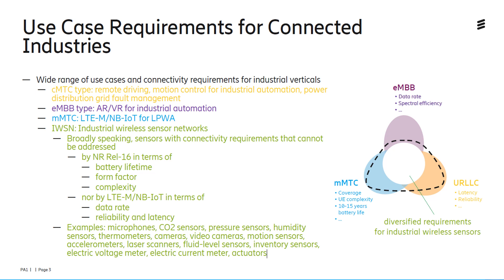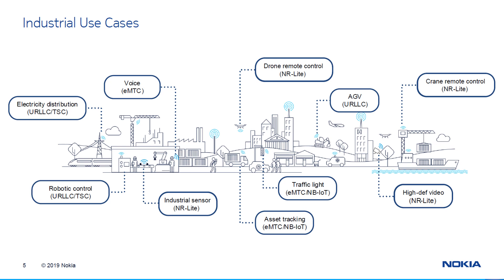This slide from Ericsson talks about the requirements for connected industries. Ericsson believes NR Light is very important to meet the Industrial IoT, or IIoT, requirements. Similarly, a slide from Nokia highlights industrial use cases and points out where URLLC is required, where eMTC and NB-IoT are required, and where NR Light will have a role to play.